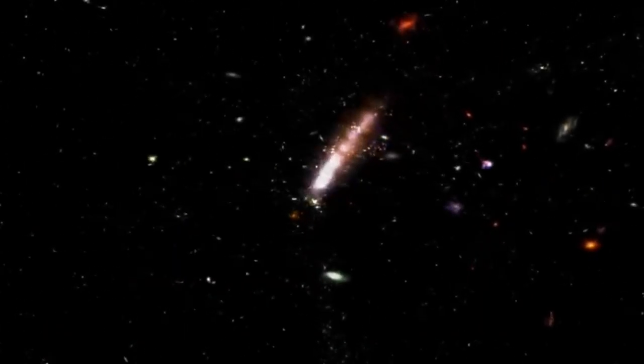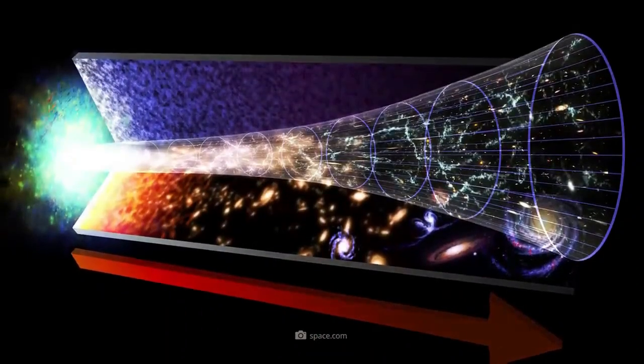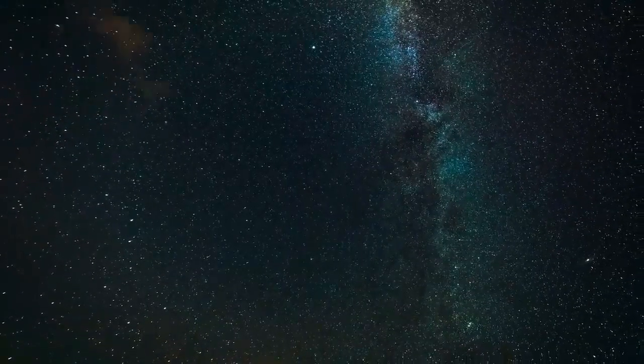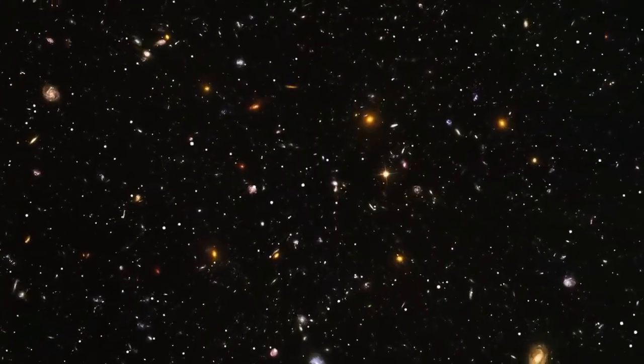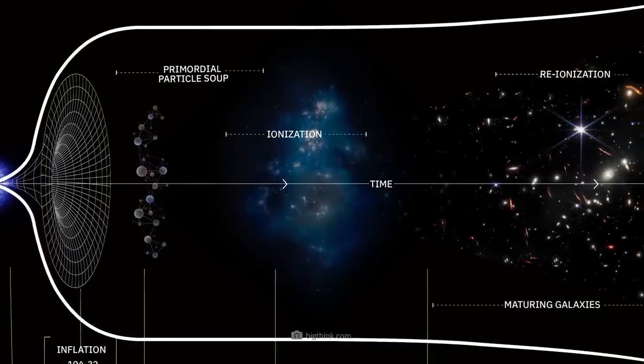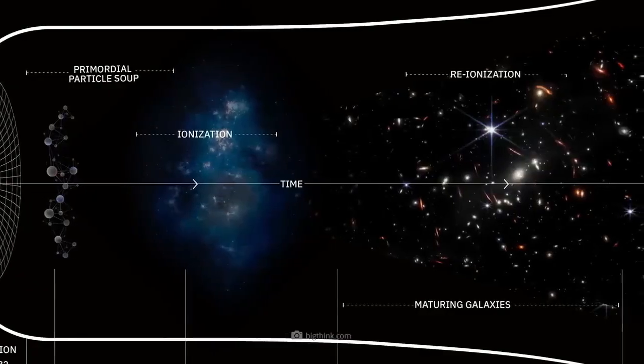CPT symmetry is like nature's built-in balance sheet. The universe should be invariant under this triple transformation. Yet, our actual universe presents asymmetries that challenge this principle. Time flows in only one direction. We remember the past, but not the future. Eggs break, but never spontaneously reassemble. Our universe also contains far more matter than antimatter, despite theories suggesting they should have been created equally during the Big Bang. These imbalances have troubled physicists for decades, raising a crucial question. If CPT symmetry is fundamental, where's the balance?